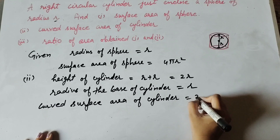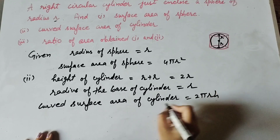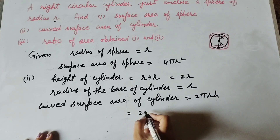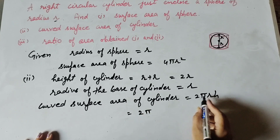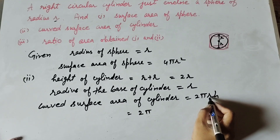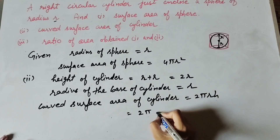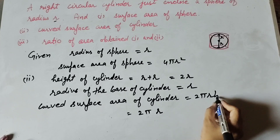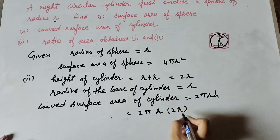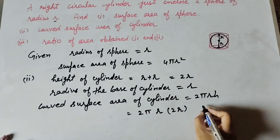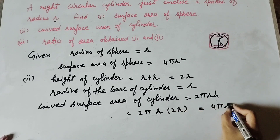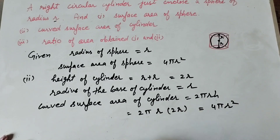The curved surface area of the cylinder is equal to 2πrh. The radius of the base of the cylinder is r and the height is 2r, so it is equal to 2π × r × 2r, which gives 4πr².